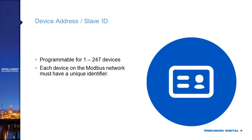It is absolutely critical that each device on the Modbus network is programmed with its own unique identifier. The analogy is a room full of people all trying to talk at once — if you don't know anyone's name, you can't address anyone specifically and everyone is just shouting. But if every person has a name and one person calls out names for each to speak, you get organized communication. The device address ensures that when a Modbus master sends a request, only the addressed device responds.